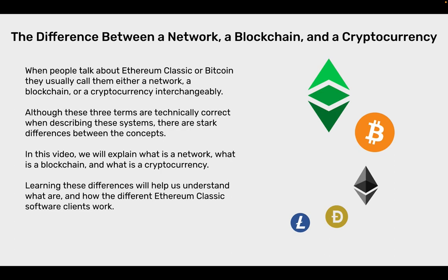When people talk about Ethereum Classic or Bitcoin, they usually call them either a network, a blockchain, or a cryptocurrency interchangeably. Although these three terms are technically correct when describing these systems, there are stark differences between the concepts. In this video, I will explain what is a network, what is a blockchain, and what is a cryptocurrency. Learning these differences will help us understand what are and how the different Ethereum Classic software clients work.